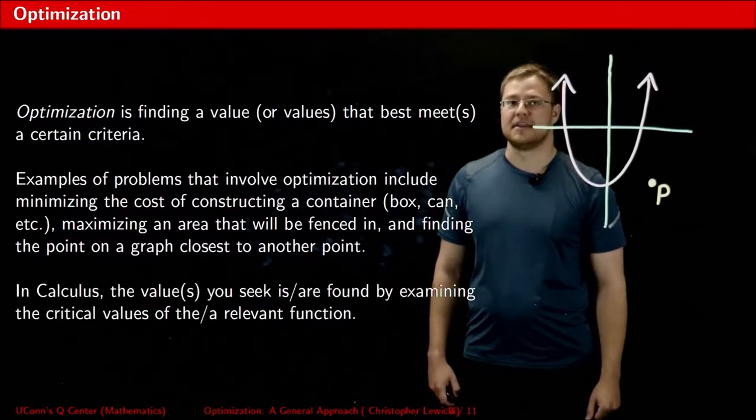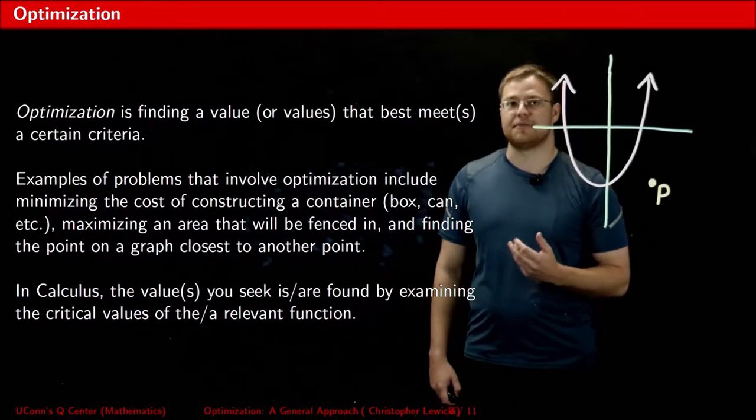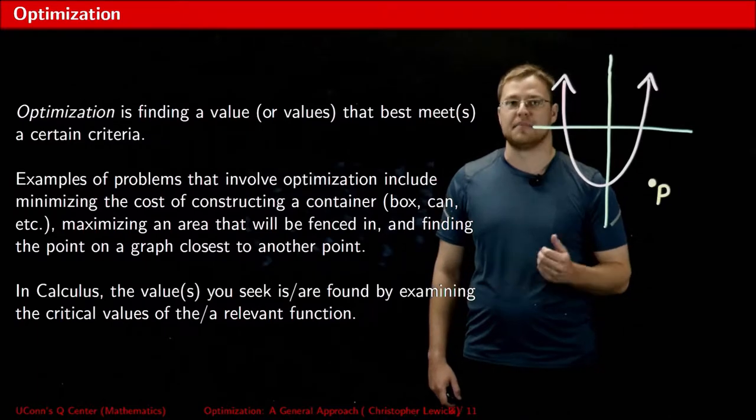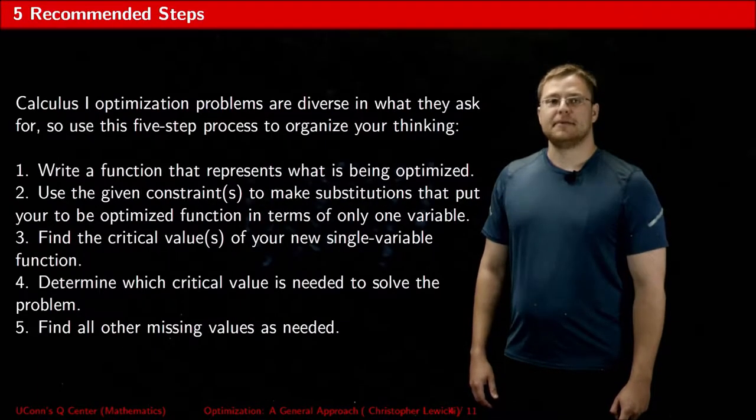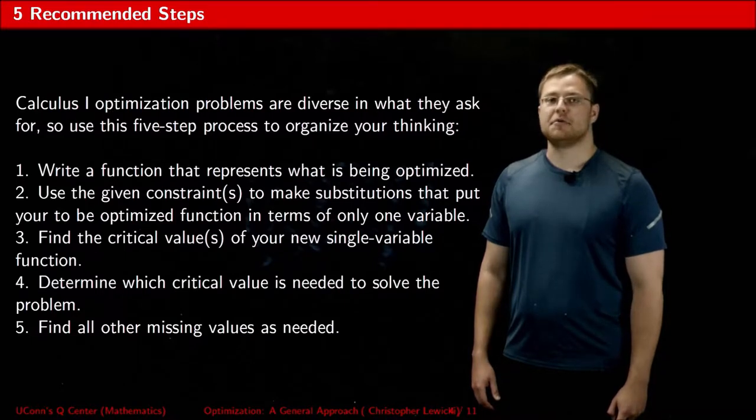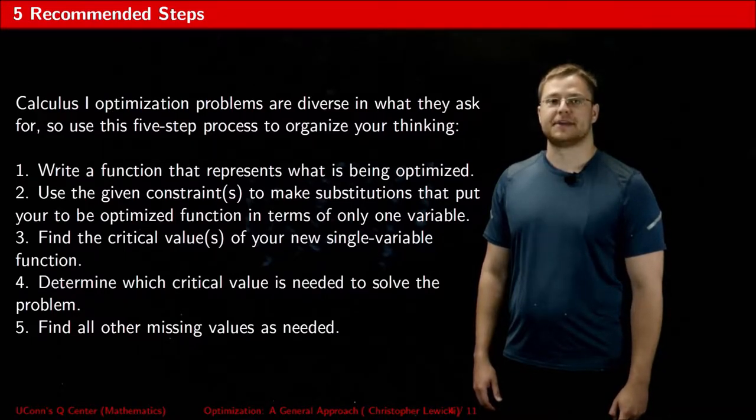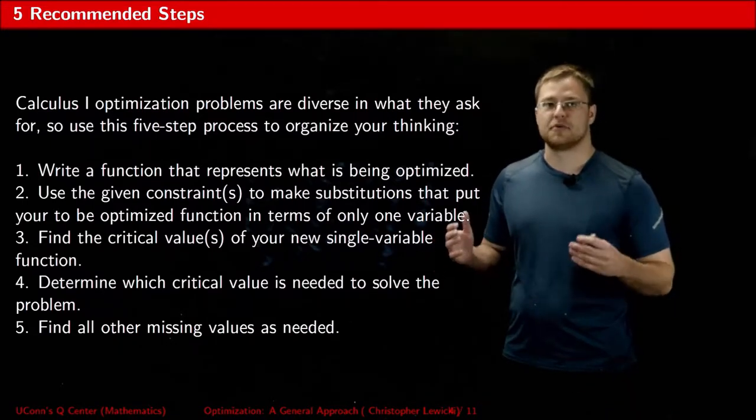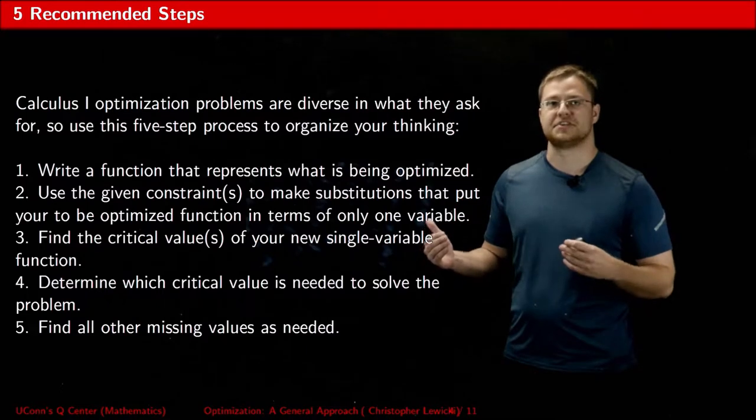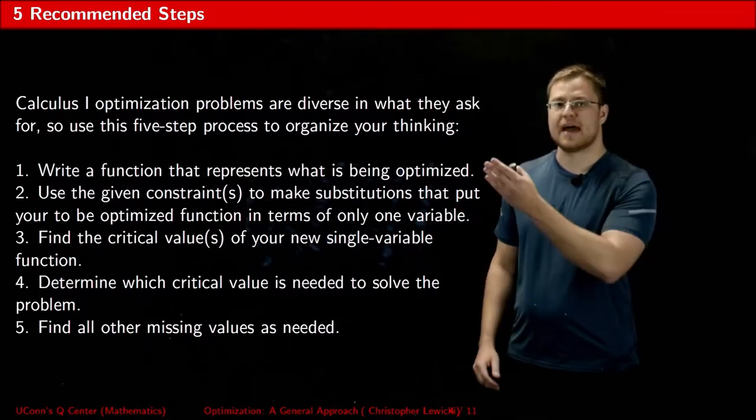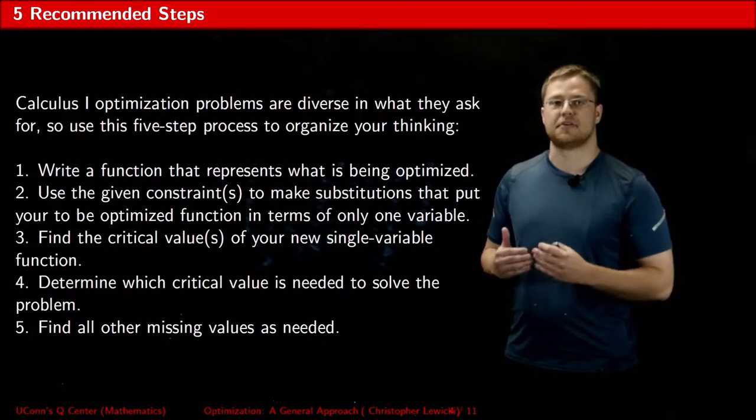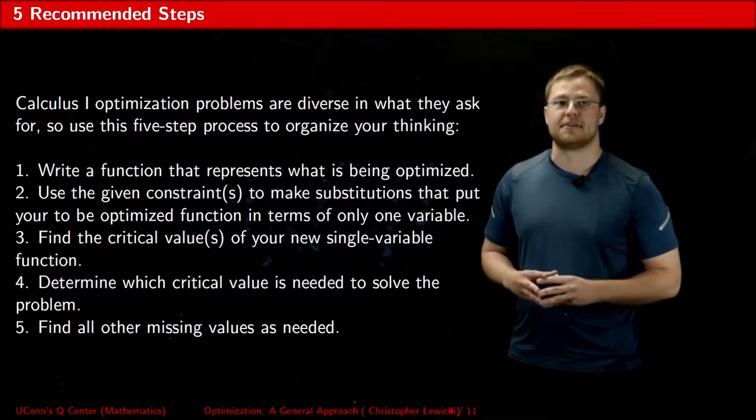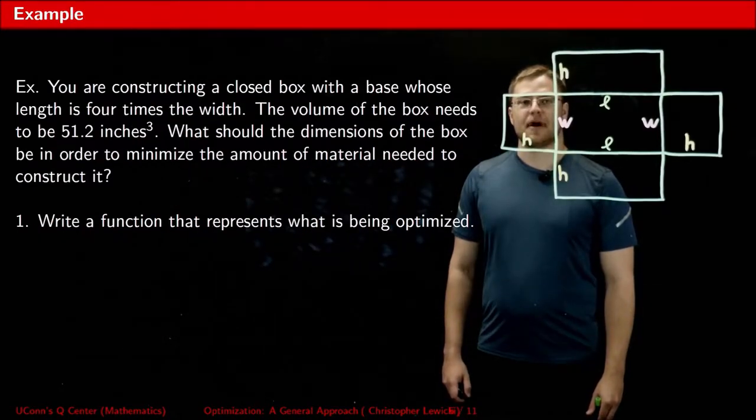What these diverse contexts have in common is that you always look for the critical values of the relevant function in order to figure out how to maximize or minimize them. One of the reasons why a lot of people think optimization is hard to understand is because no two optimization problems are alike. Because optimization problems cover such a wide array of contexts, you can't expect to think about one optimization problem the same way as another. Fortunately, what I have for you here is a five-step process that you could use to help you break down an optimization problem into manageable steps no matter what the context happens to be.